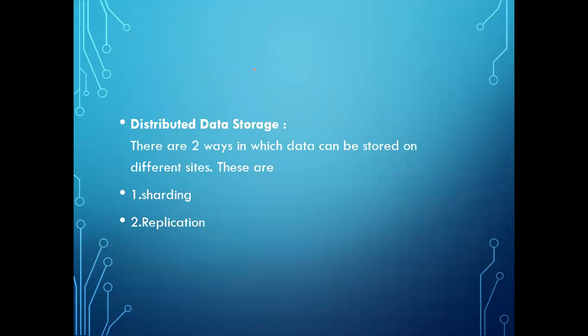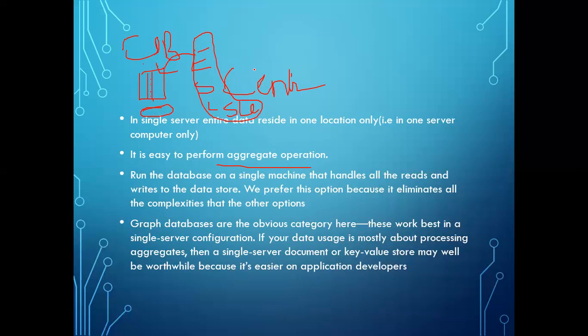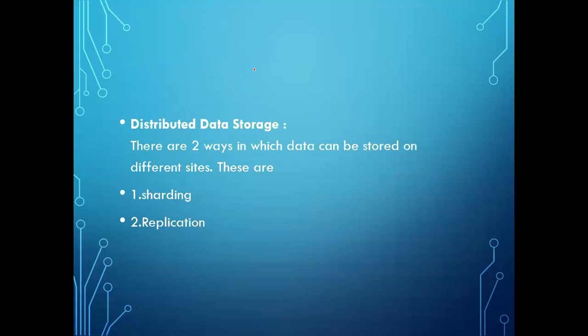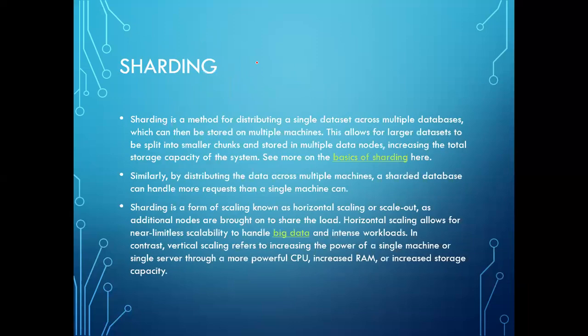A single server is only useful when you have less data, can easily perform aggregate operations, and it is developed using a key-value database. If you have a lot of data, you need to go for distribution of data storage — dividing data among multiple locations, also called multiple sites. There are two methods in data distribution: sharding and replication. Sharding is dividing the data set across multiple locations, each part stored in a separate database.